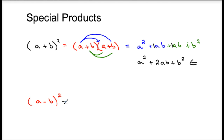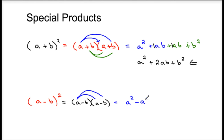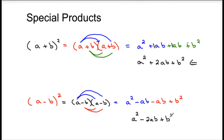The bottom one is very similar: the quantity a minus b times the quantity a minus b. FOILing this out: a times a is a squared; a times negative b is negative ab; negative b times a is again negative ab; and negative b times negative b is plus b squared. Combine like terms and you get a squared minus 2ab plus b squared. The biggest difference is that middle term — it's minus 2ab instead of plus 2ab.